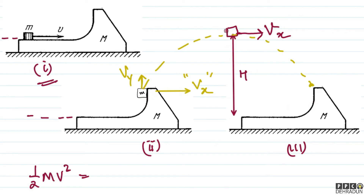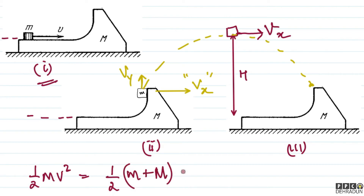Between situations 2 and 3, there is an intermediate position where the disc is at its topmost point. For this intermediate case, the total mechanical energy of the system includes a kinetic energy term: ½(m + M)vx², because at the topmost point, both small m and capital M have the same x-velocity vx. Small m's x-velocity is vx at this moment, and capital M's velocity is always vx.